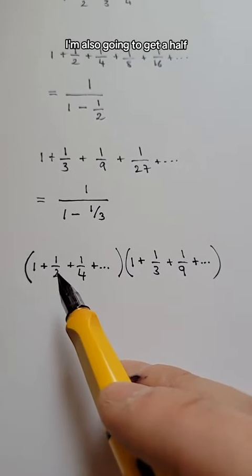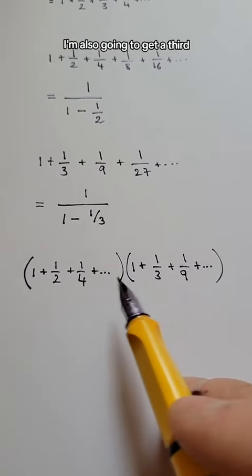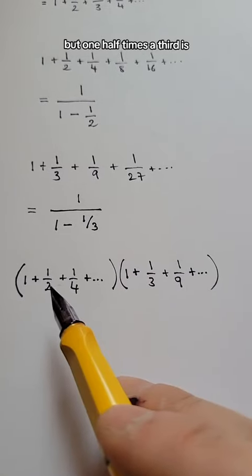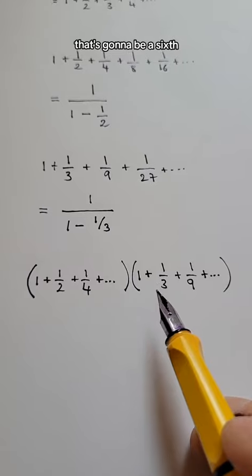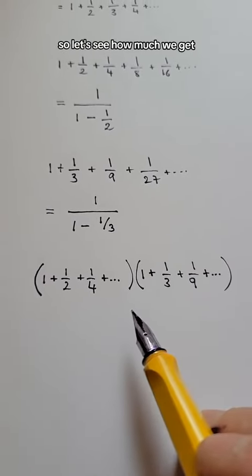So I'm going to get terms like 1, 1 times 1. I'm also going to get 1/2, 1 times 1/3. I'm also going to get 1/3, but 1/2 times 1/3, that's going to be a sixth. So I also get the sixth. So let's see how much we get.